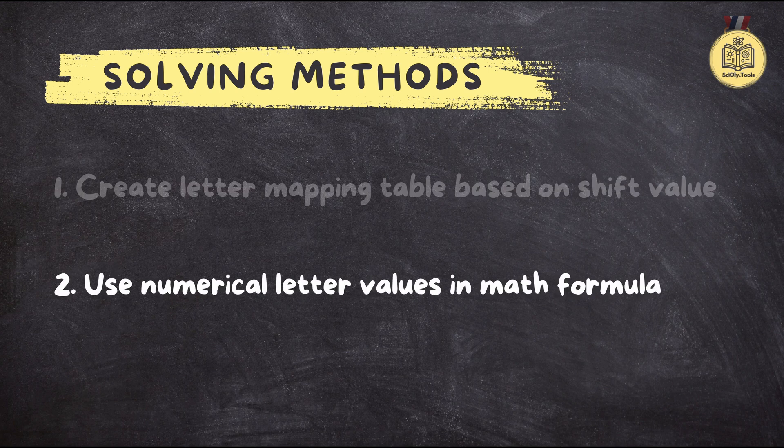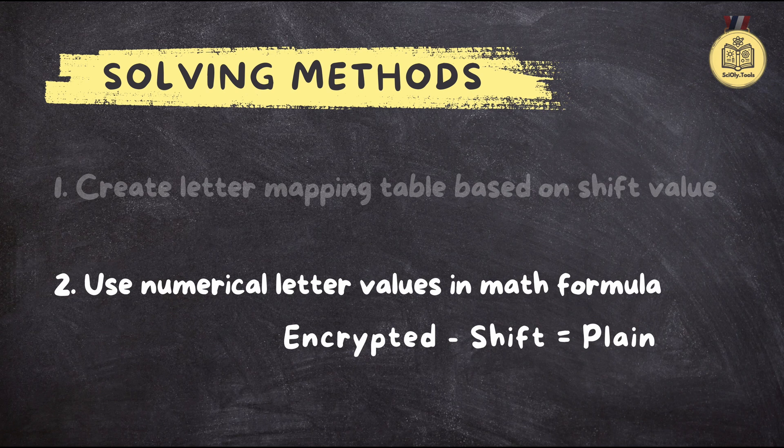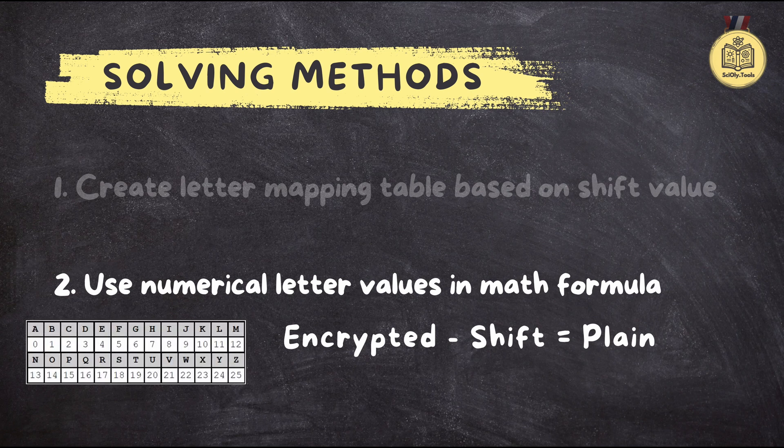Are you ready to explore the math behind Caesar ciphers? Math can be a powerful tool in code breaking. For this method we'll be using a straightforward formula: encrypted minus shift equals plain. And the Code Busters exam provides a handy table that assigns numerical values to each letter of the alphabet, so you don't have to memorize anything — it's right there in front of you.